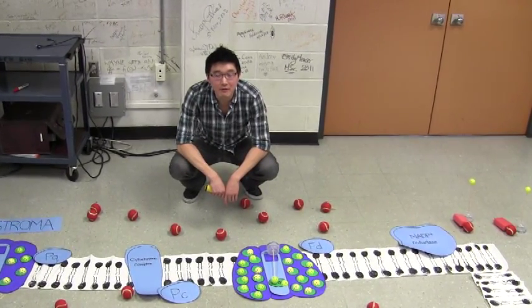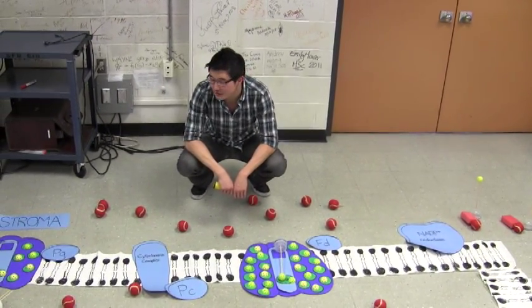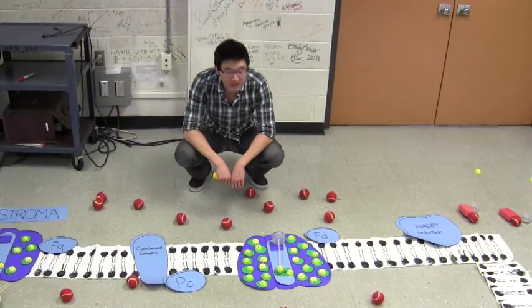Okay, so this is video 3 for part B of your photosynthesis lab. This is about cyclic electron flow.